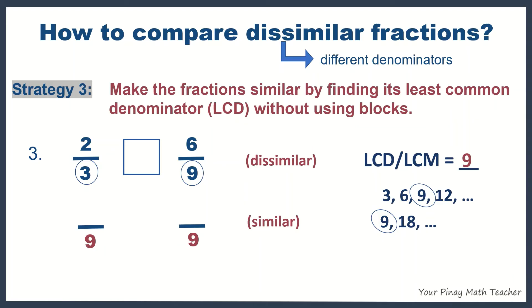Now, look at 2 thirds. What will you multiply to the denominator 3 to get a denominator 9? Of course, it's 3. Do the same with the numerator 2. So, what will you multiply to 9 in 6 ninths to get 9?